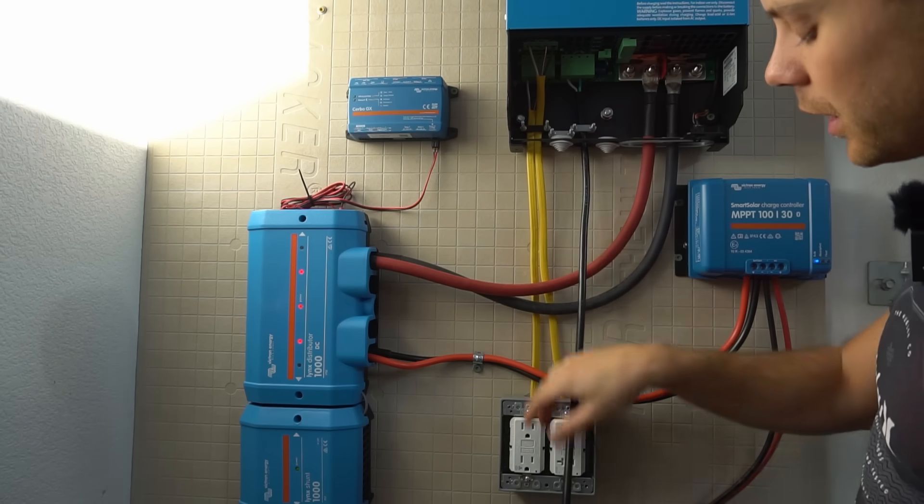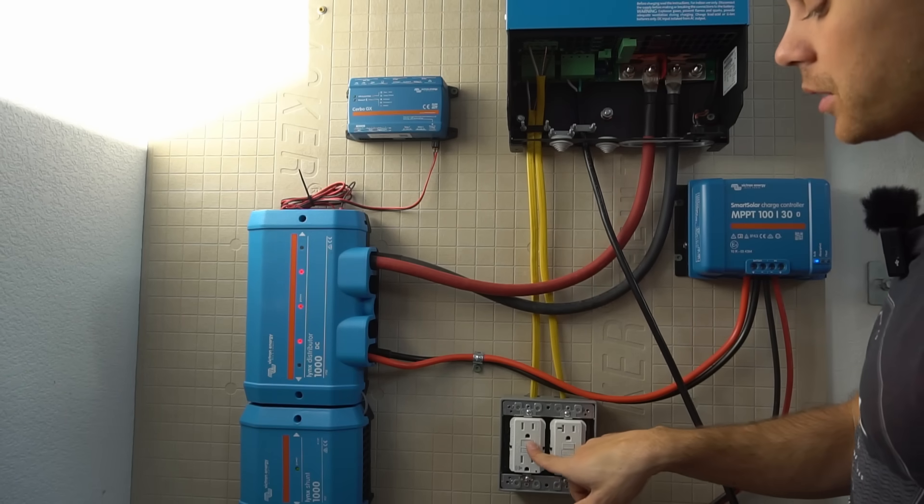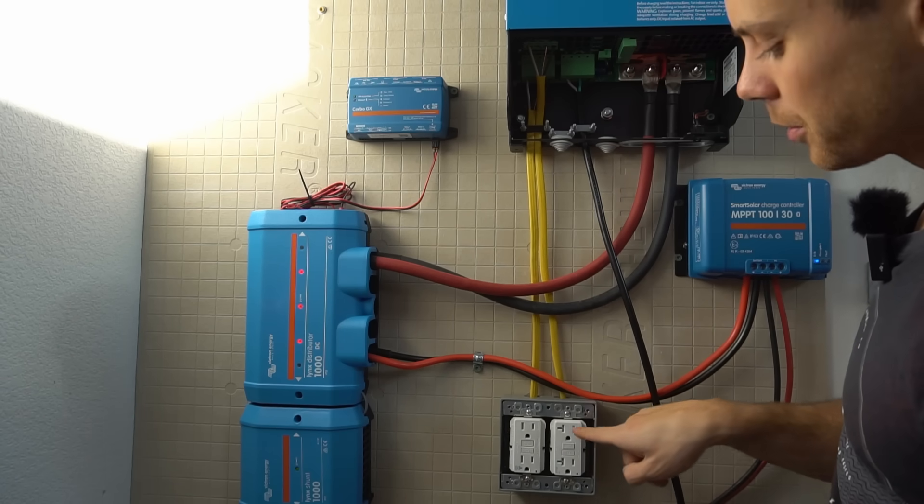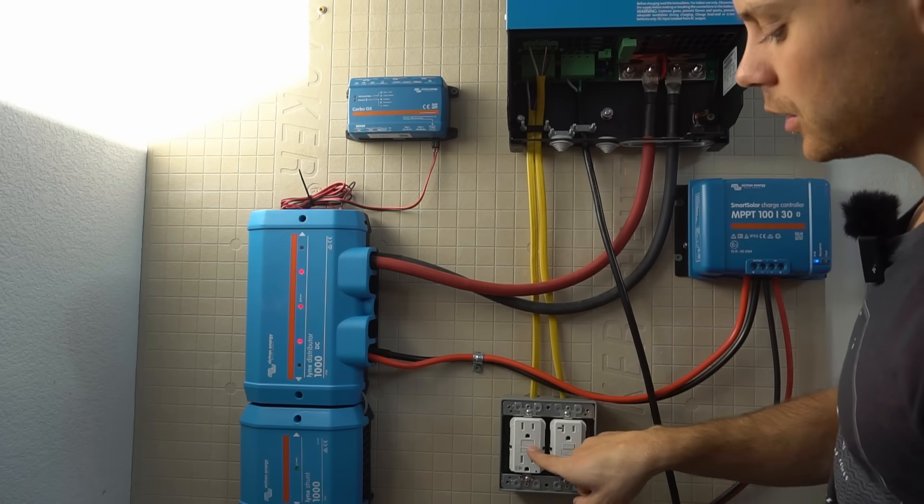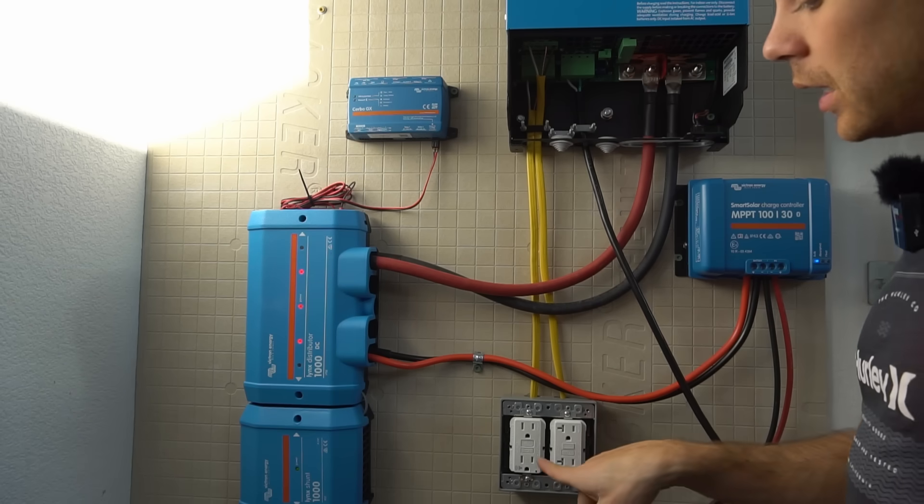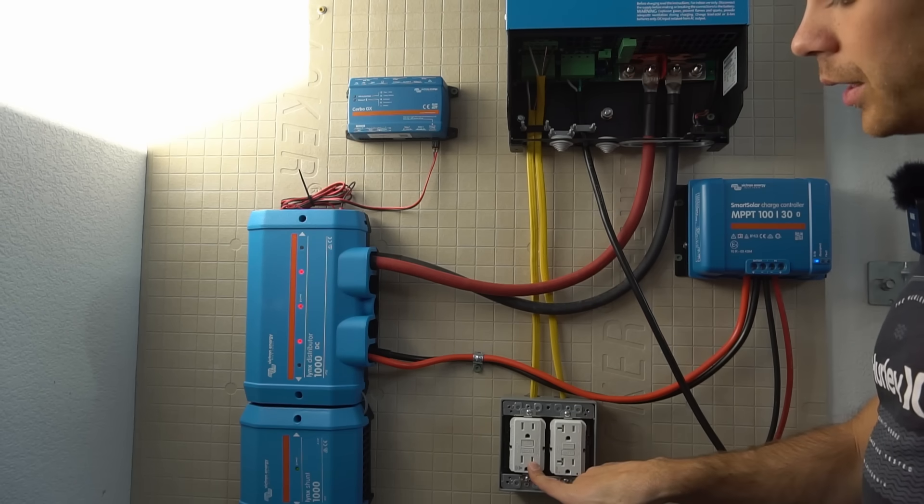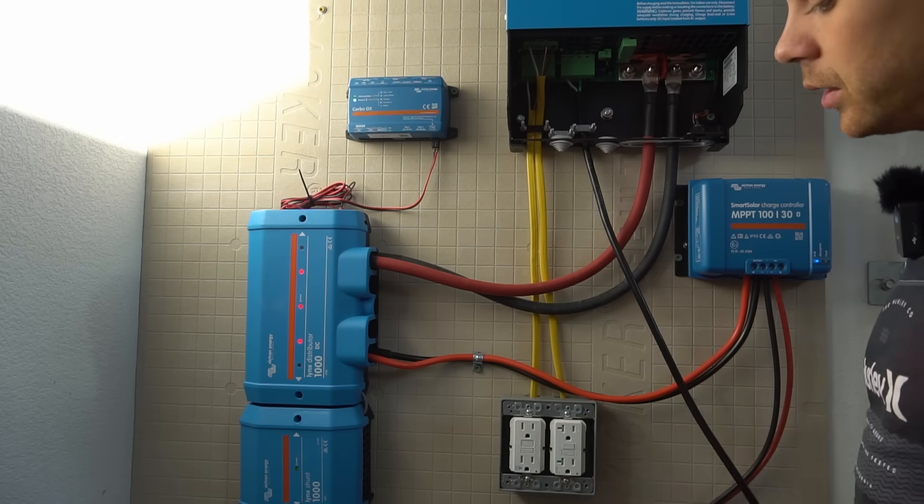Next the AC output is connected to two GFCI receptacles. AC output number two is over here and AC output number one is over here. And when I'm inverting I'm using AC output number one. So this is how I power loads with this system.